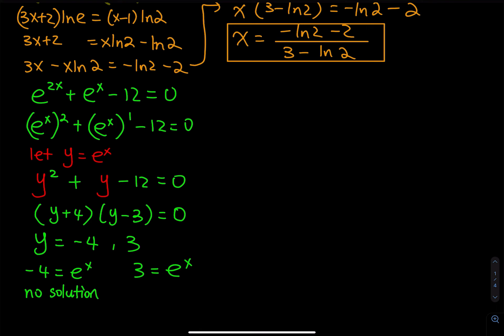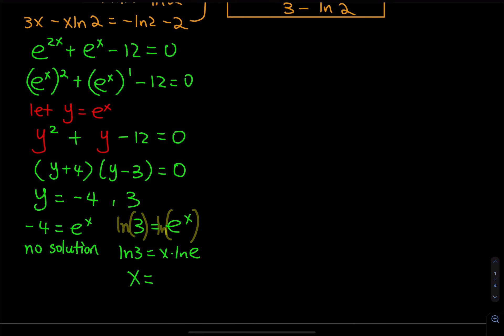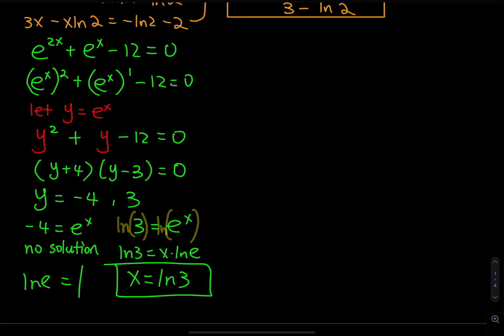For y equals 3: we have 3 equals e to the x. Take ln on both sides and bring x down. So ln3 equals x times ln e, and finally x equals ln3, because ln e equals 1. You have to remember: ln e equals 1, because e raised to the first power equals e.